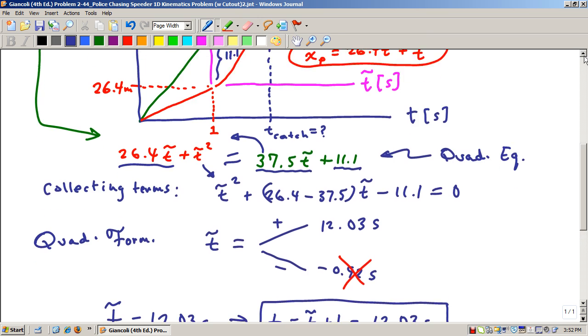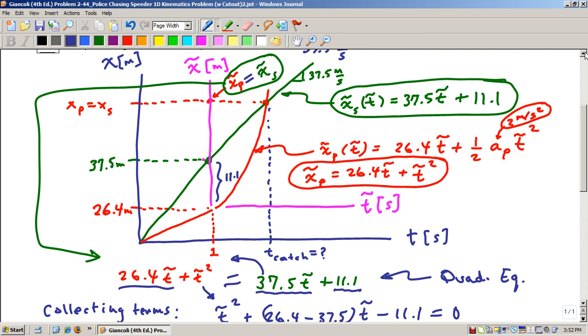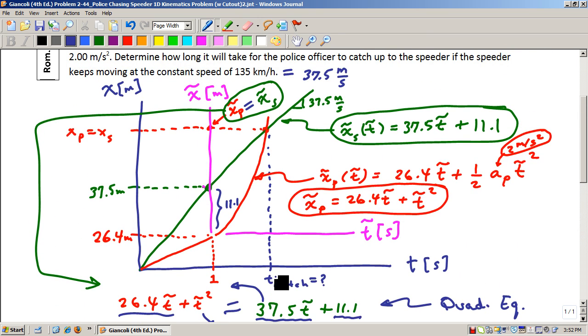So let's just go back to the graph up here. The T original time was this guy whereas we just found the T-tilde of catch right here and so this entire time here T-catch